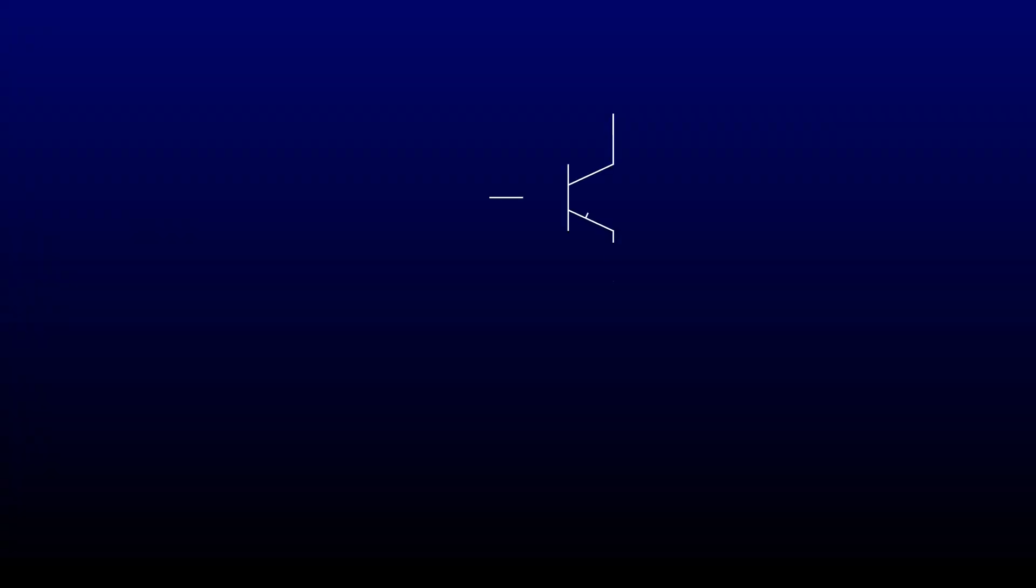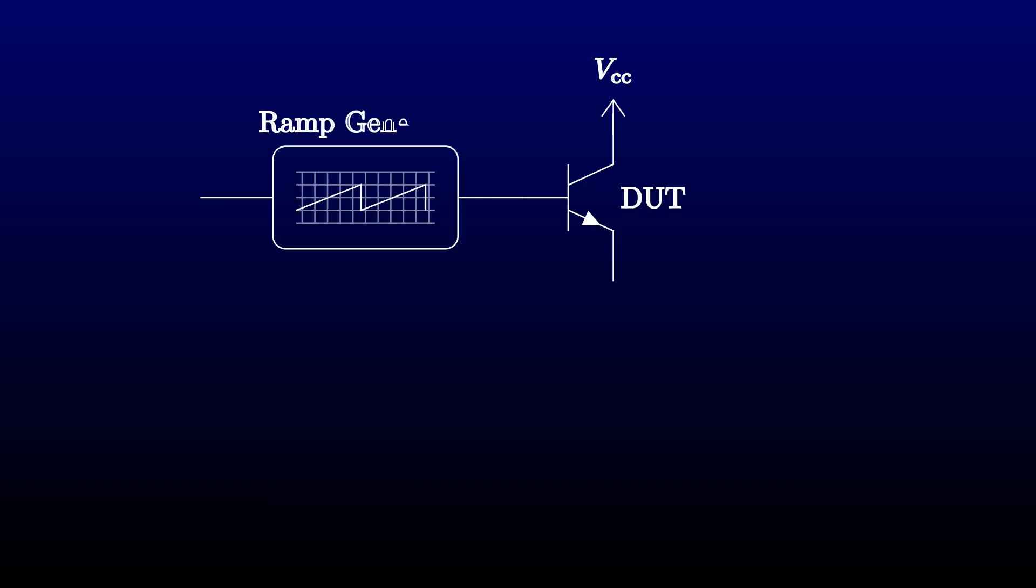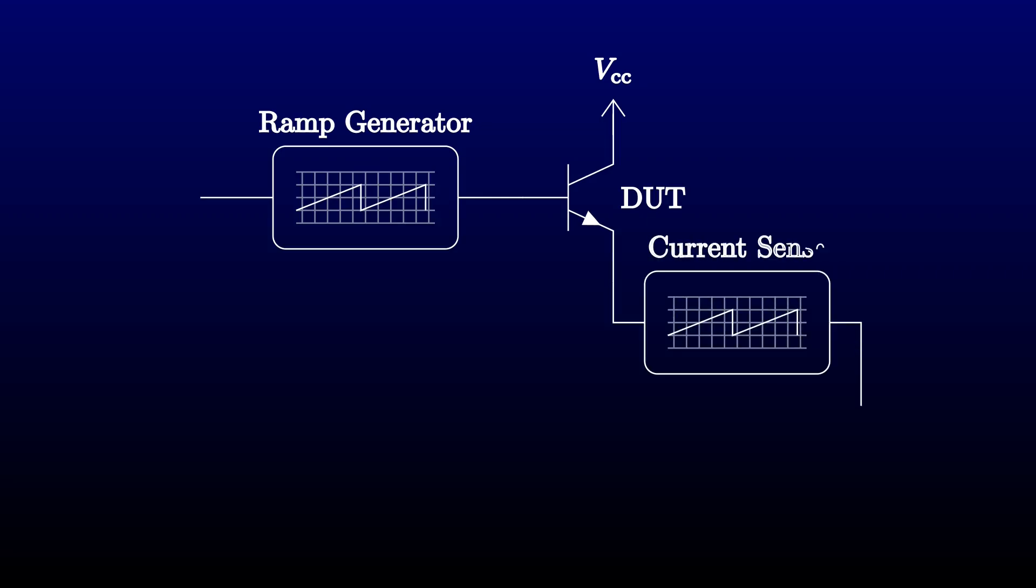We've built a test rig that takes our device, a transistor or diode, and applies a voltage ramp to one of its terminals. We built a circuit that can sense the current at another terminal. That circuit triggers the ramp generator to reset at a target current.